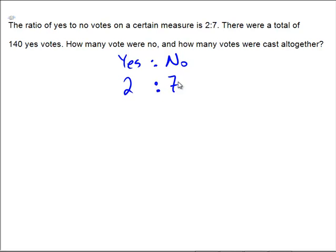Remember, that doesn't mean the number 2 or the number 7, but it means 2x and 7x. There were a total of 140 yes votes. So yes, there are a total of 2x plus 7x. There's going to be a total of 9x many votes altogether.